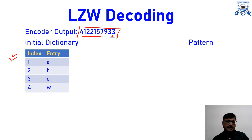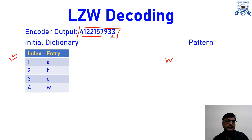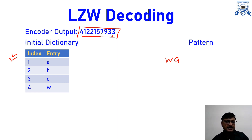We start decoding. The first index is 4 — against index 4 we have the letter W, so we get W. We are only getting a single letter so there is no need to update the dictionary yet. Next index is 1 — against 1 we have A, so we put A. Now we have the pattern W and A. WA is not there in the dictionary, so we update the dictionary: next entry is index 5 as WA.